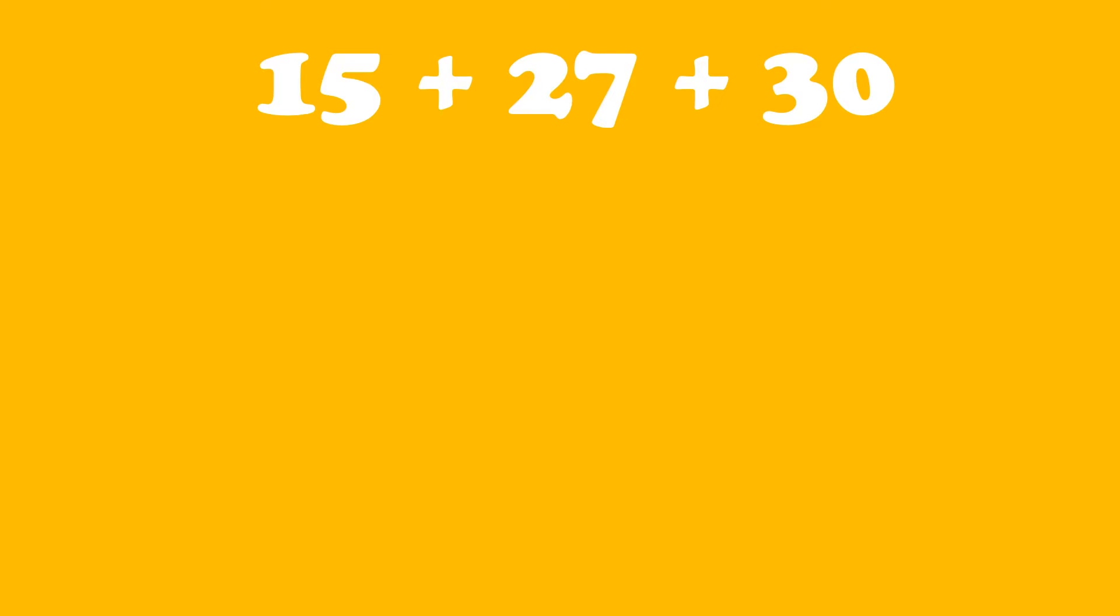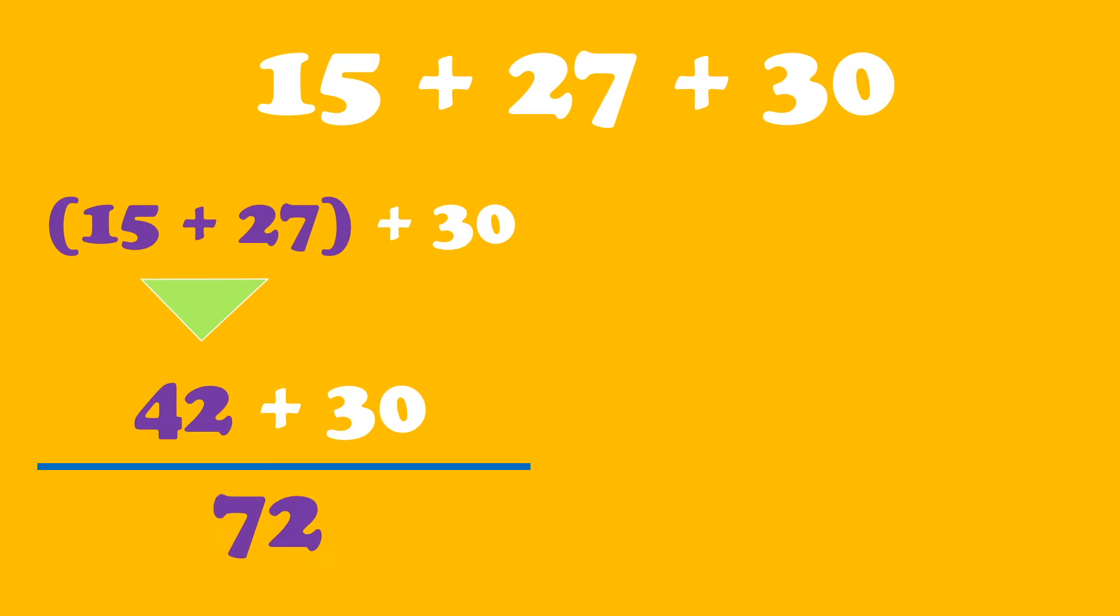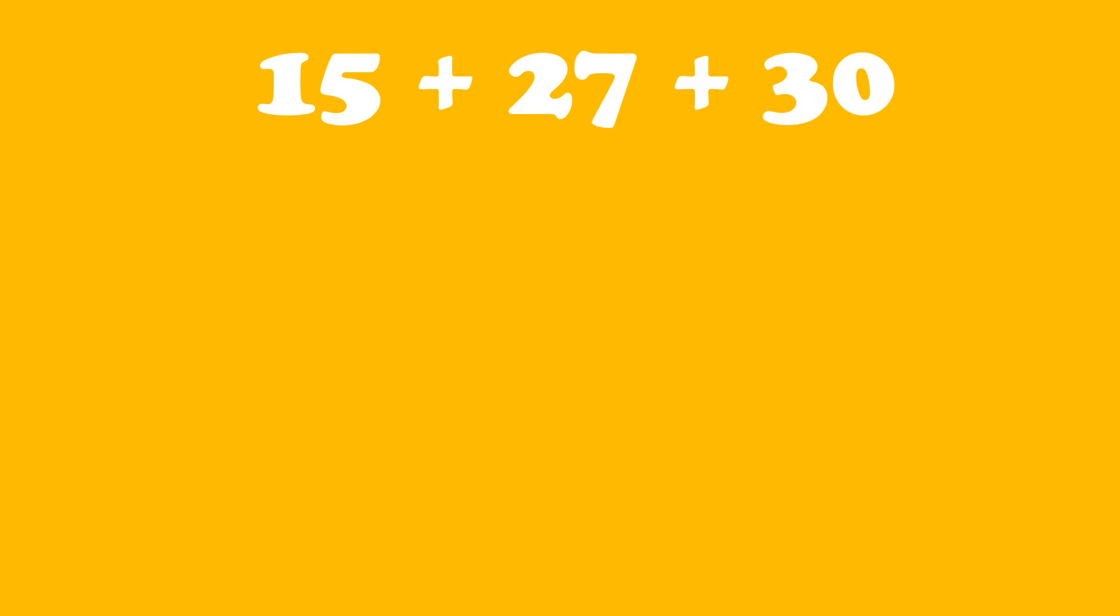15 plus 27 plus 30 is our next equation, and it's pretty tricky but it's easy. 15 plus 27, we're going to group that together, and the 30 is separate. So 42 plus the 30... 15 plus 27 gives us 42, and it equals 72. Here I'm going to show you a different way so you understand more.